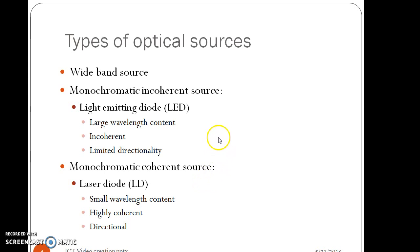LED is an example of incoherent source of light whereas laser is a coherent source of light. Characteristics include large wavelength content, incoherent, limited directionality for LEDs, whereas small wavelength content, highly coherent, directional for laser diode.